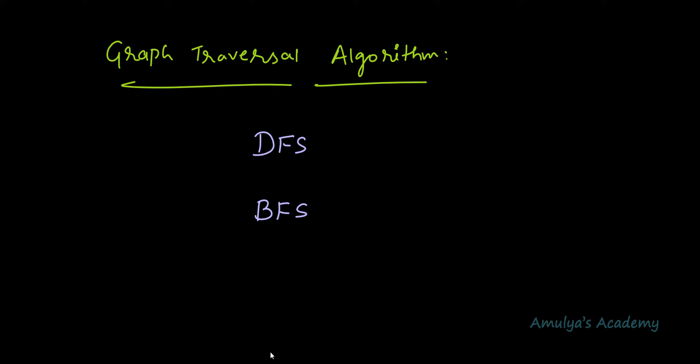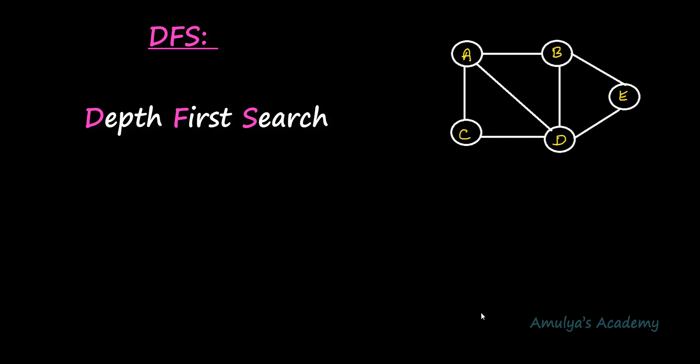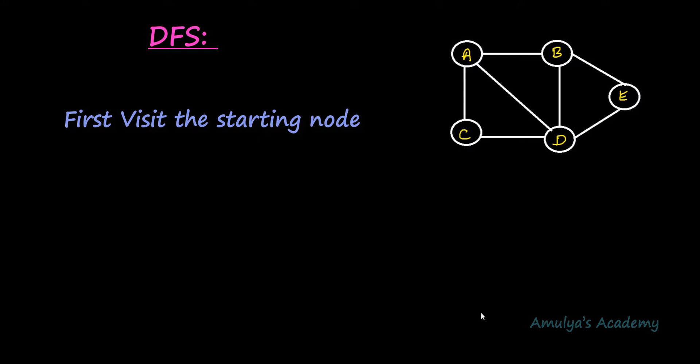First, let's see what DFS is and how to traverse a graph using the DFS traversal algorithm. DFS stands for Depth First Search. In this algorithm we begin the traversal operation from the starting node. The question is how to choose the starting node, or from where to start the traversal operation. In graphs, every node is equal.